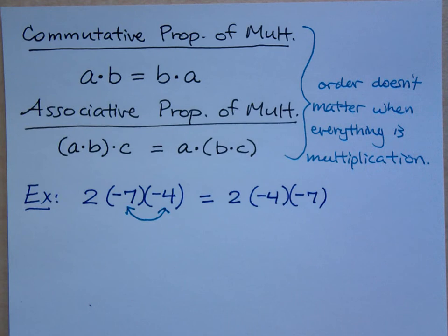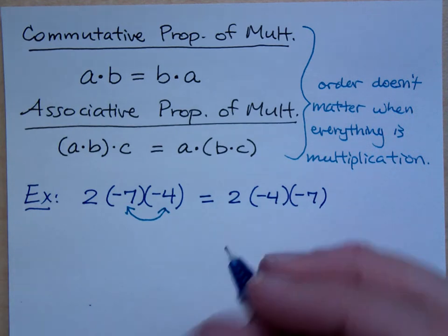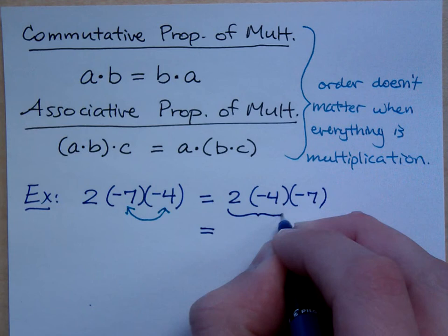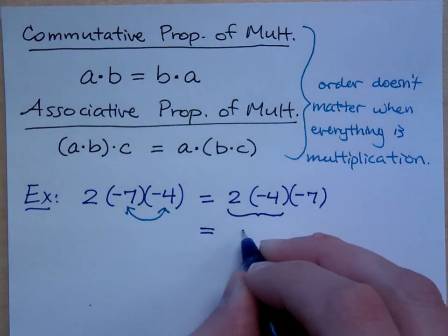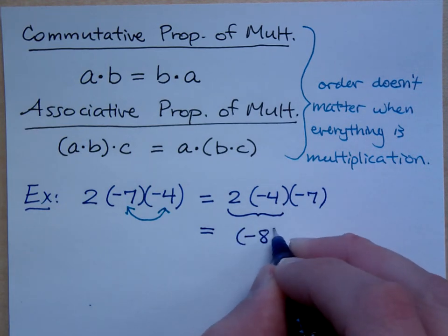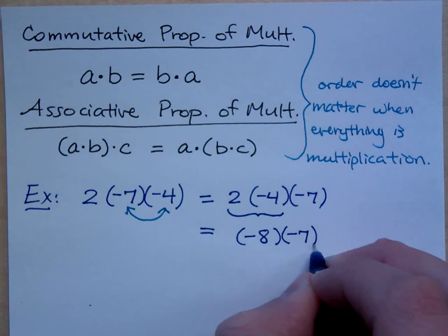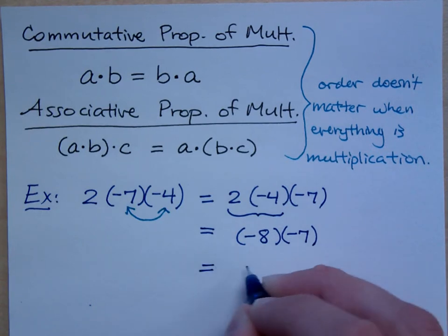So if I do it this way, what's 2 times negative 4? Negative 8. And then negative 8 times negative 7 is what? Positive 56, right?